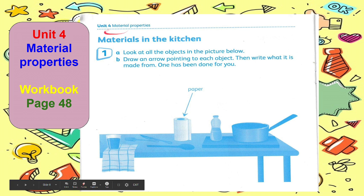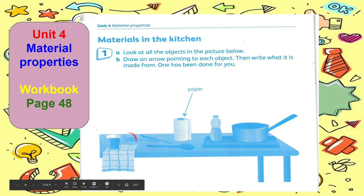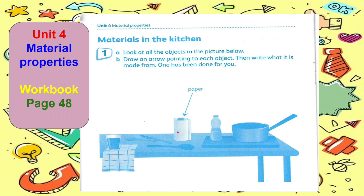Look at all the objects in the picture below. Now, draw an arrow pointing to each object, then write what it is made from. These kitchen towels have paper material. What about this tea towel? How about the water bottle? This drinking glass, this chopping board, this cutlery, and this saucepan?